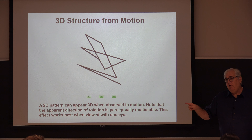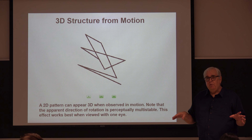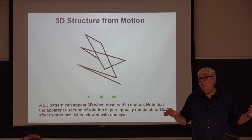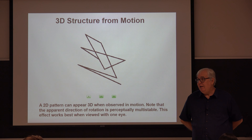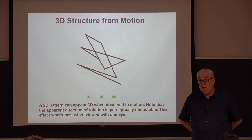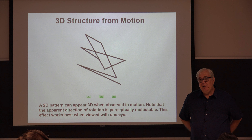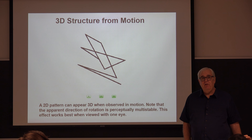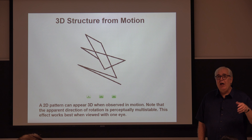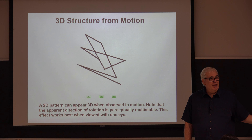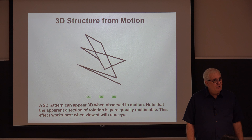Everything we've covered so far — those sources of information have been around since the Italian Renaissance. Linear perspective was obviously invented in the 15th century. Chiaroscuro is similar vintage. Texture is a little bit newer but it's basically a generalization of linear perspective. So today we're going to cover one of the first modern discoveries of a new source of 3D information that wasn't around 500 years ago.